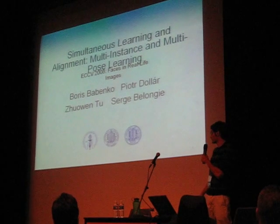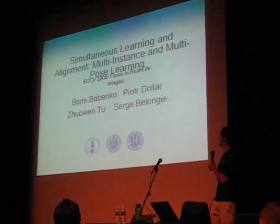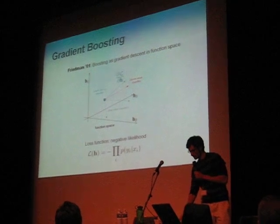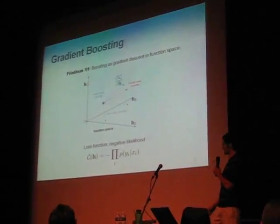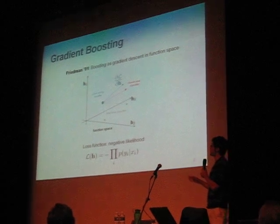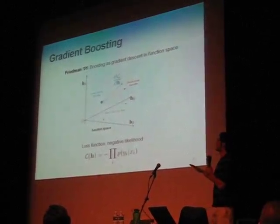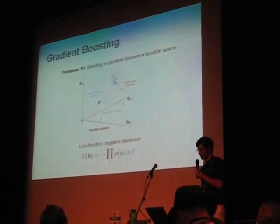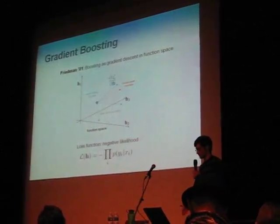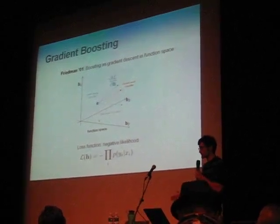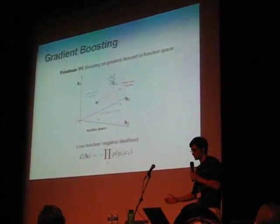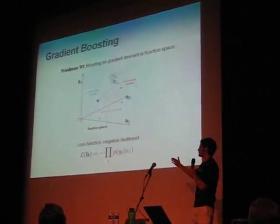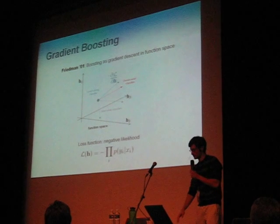We're going to look at two different types of alignment and two different algorithms. Both of the algorithms are boosting-based. For both of them, we use a framework called gradient boosting proposed by Friedman in 2001 to derive the algorithms. Basically, this is a framework that allows you to derive a boosting algorithm for any differentiable loss function — for example, one common loss function is negative log likelihood.